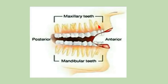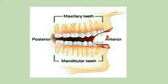The upper jaw is called the maxilla and the lower jaw is called the mandible. Teeth present in the upper jaw are called maxillary teeth and in the lower jaw they are called mandibular teeth. The front region is called anterior and the back is the posterior part.